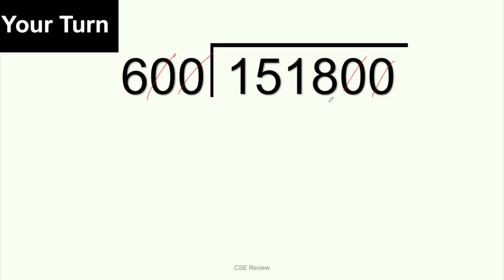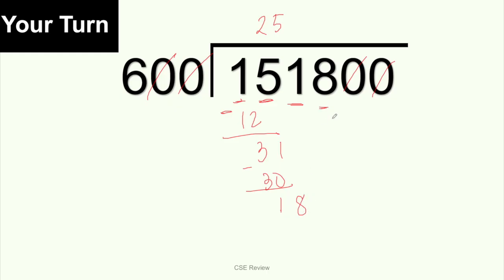Now that we have 1,518 divided by 6: 1 can't be divided by 6 because it's too small, so we join the 5, making it 15. 15 divided by 6 gives you 2. 2 times 6 is 12, subtract from 15, leaving 3. Bring down the next digit, 1, making it 31. 31 divided by 6 gives you 5. 5 times 6 is 30, subtract, leaving 1. Then bring down 8, making it 18. 18 divided by 6 is 3 — 6, 12, 18. 3 times 6 is 18, subtract 18, you're left with nothing. The answer is 253.